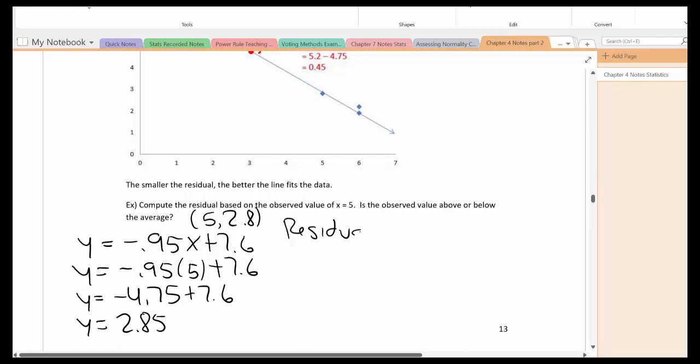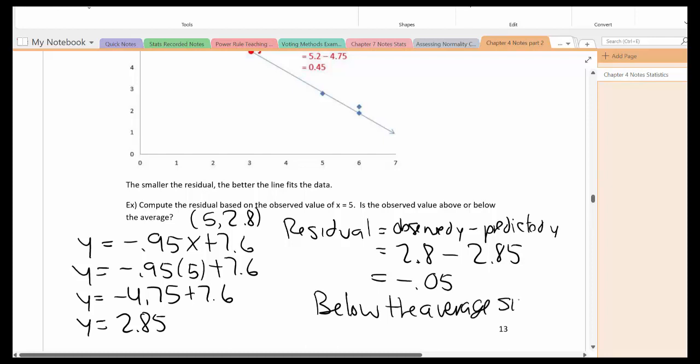So remember the residual is equal to what? The observed y minus the predicted y. So the observed, that was 2.8. That's going to give me negative 0.05. And this is going to be below the average since the residual is negative.